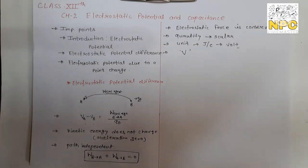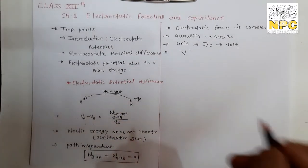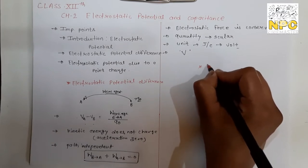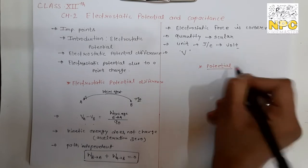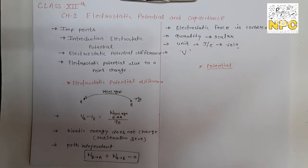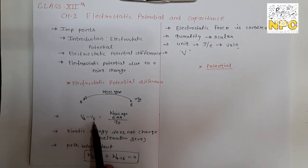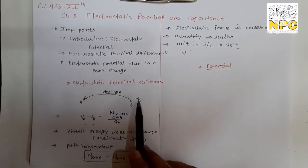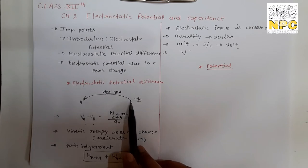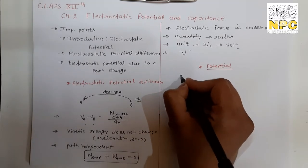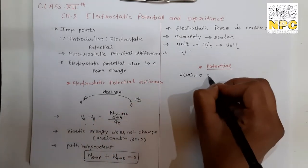Now we talk about potential at a point. If our aim is to find potential at one particular point rather than potential difference, in physics it is assumed that the potential at infinity is zero. So if you place the test charge at infinity instead of point B, and bring it from infinity to point A, the work done equals the potential at point A.